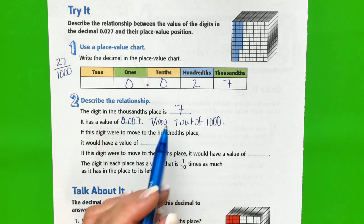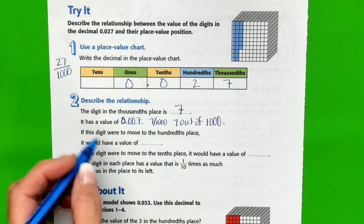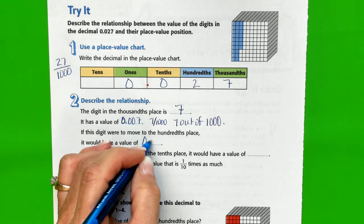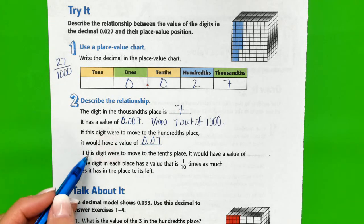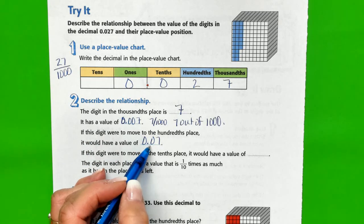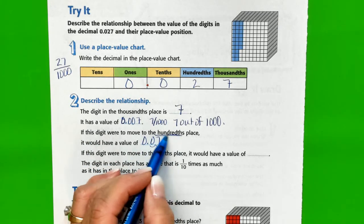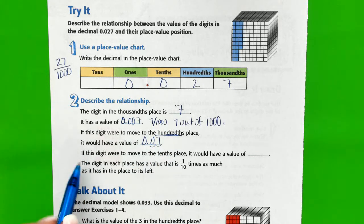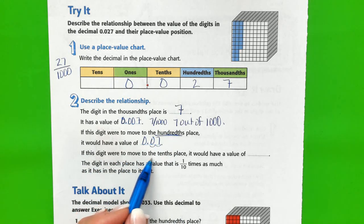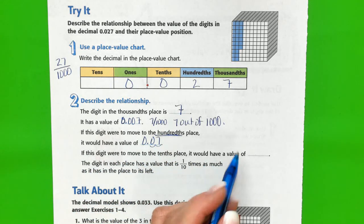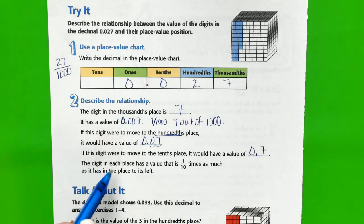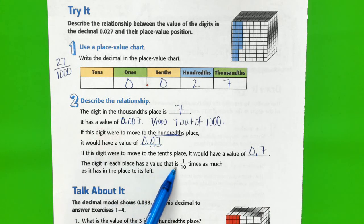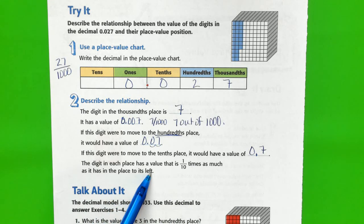Another way to say it: if this digit were moved to the hundredths place, it would be ten times as much, so it would have a value of 0.07, because we're two places behind the decimal. If this digit were moved to the tenths place, it would have a value of 0.7. The digit in each place has a value that is one tenth times as much as it has in the place to its left.